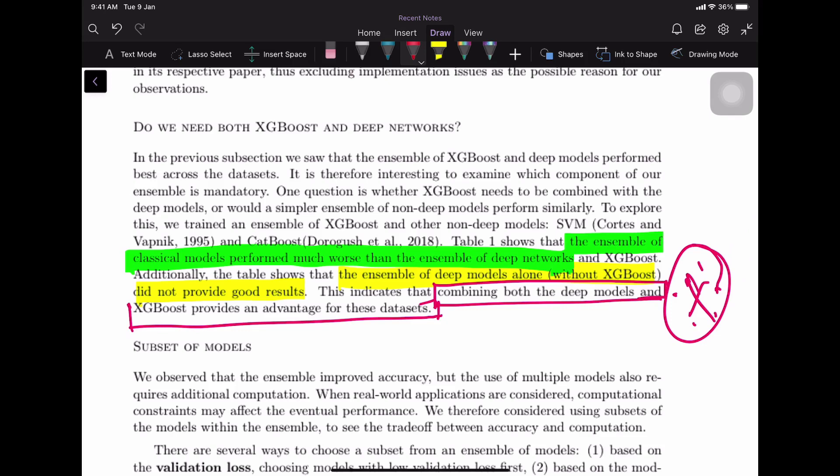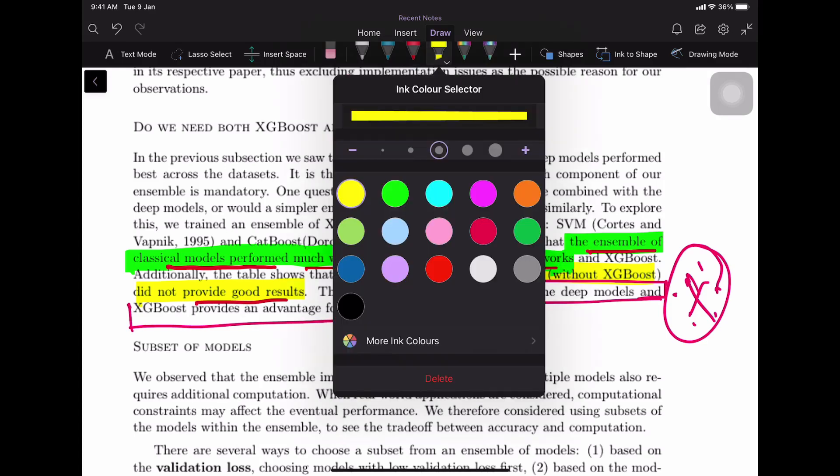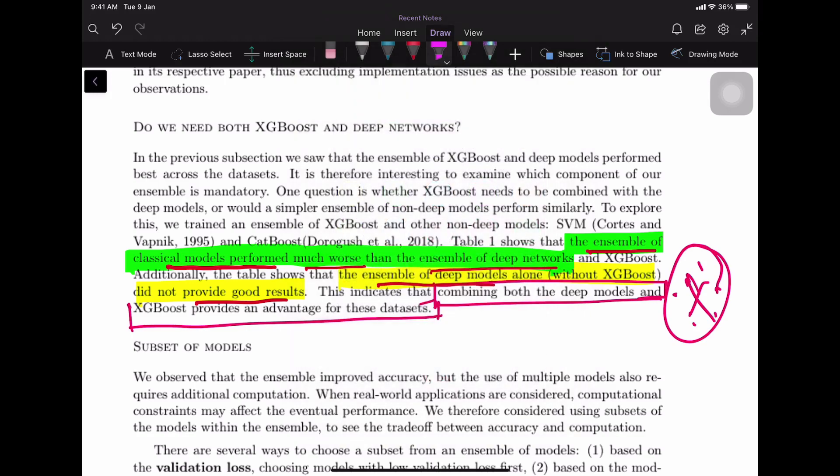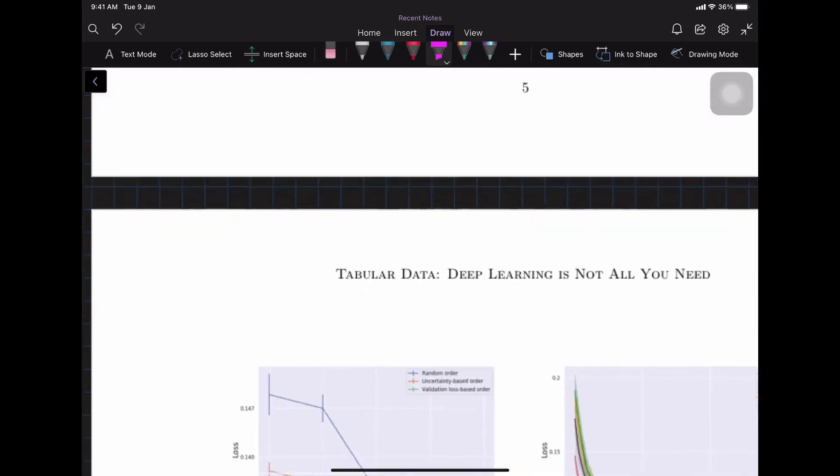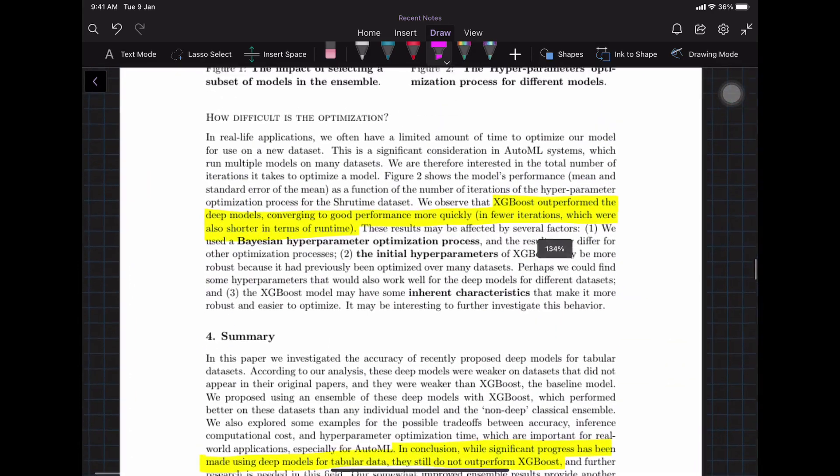The important thing that we didn't notice: the ensemble of classical models performed much worse than the ensemble of deep learning models. That is good news for deep learning practitioners. Additionally, the ensemble of deep learning models alone without XGBoost also did not give good results. So what gave ultimately good results is the one with deep learning model and also XGBoost, and that gave good results on all these datasets. That is good news.